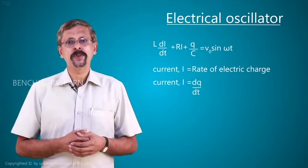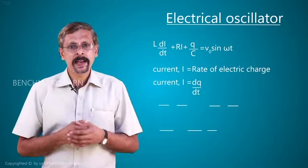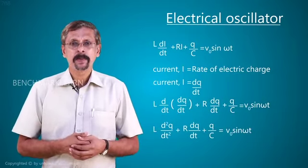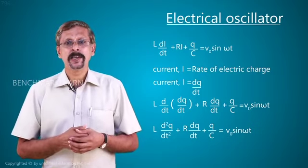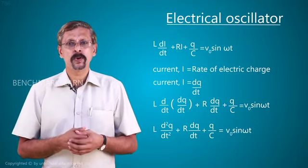By making this substitution, we rewrite the equation as L d square Q by dt square plus R dQ by dt plus Q by C equal to V0 sin omega t.